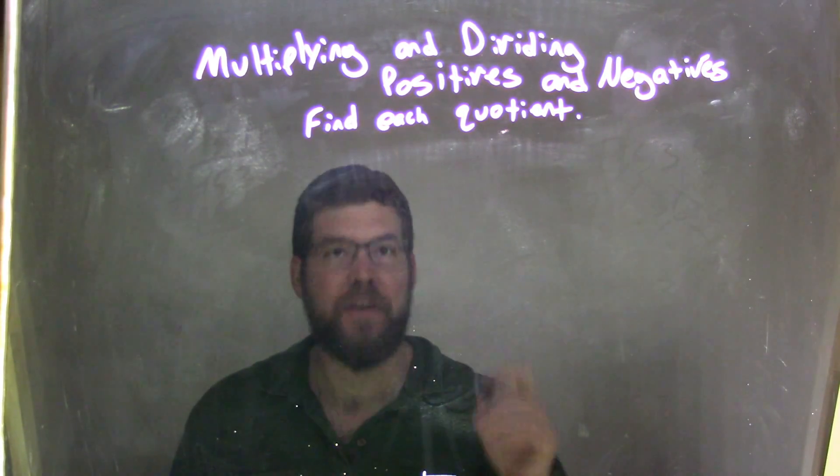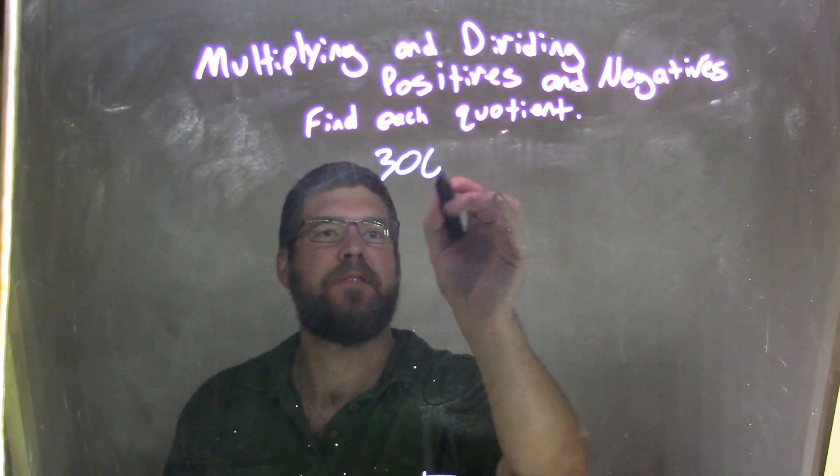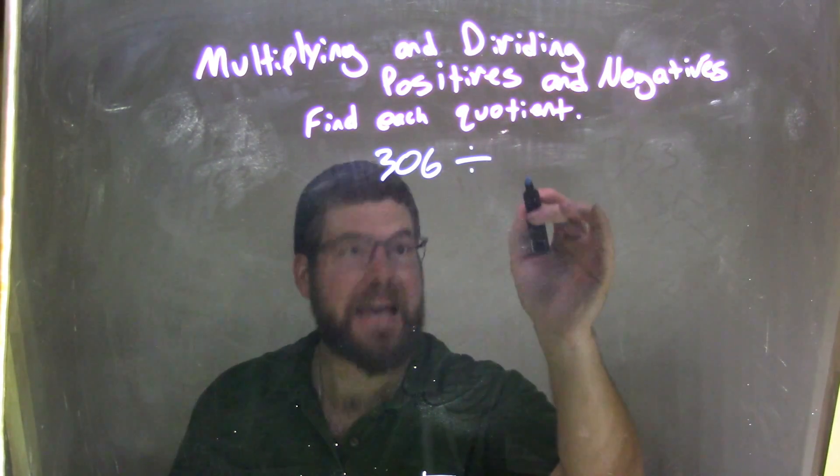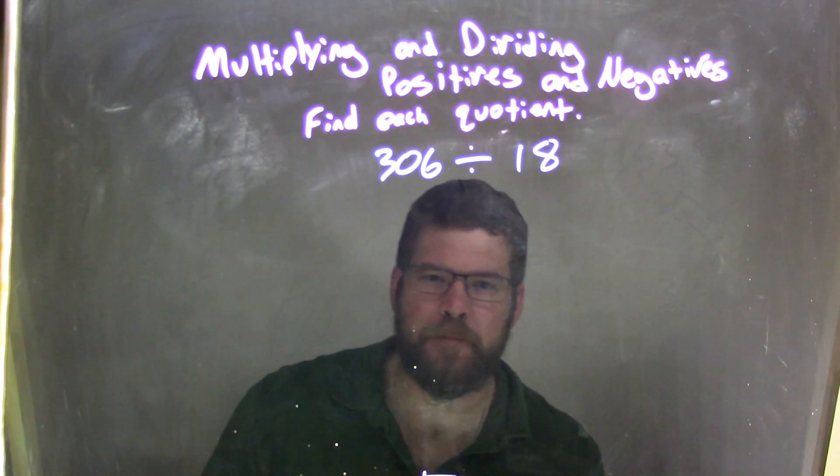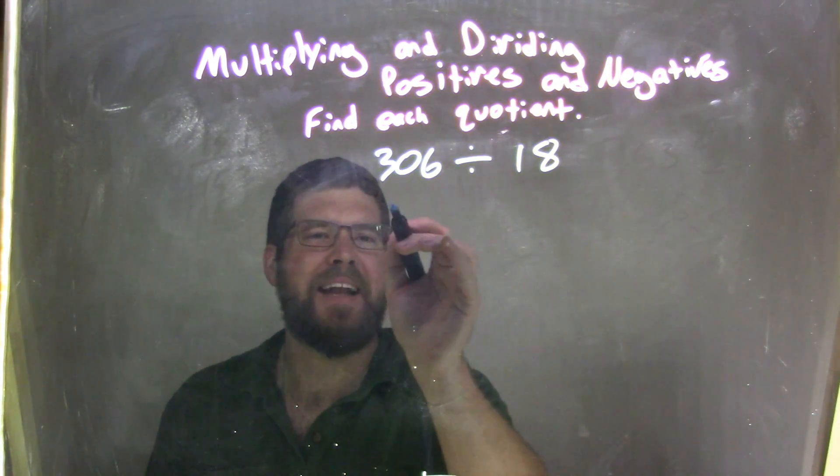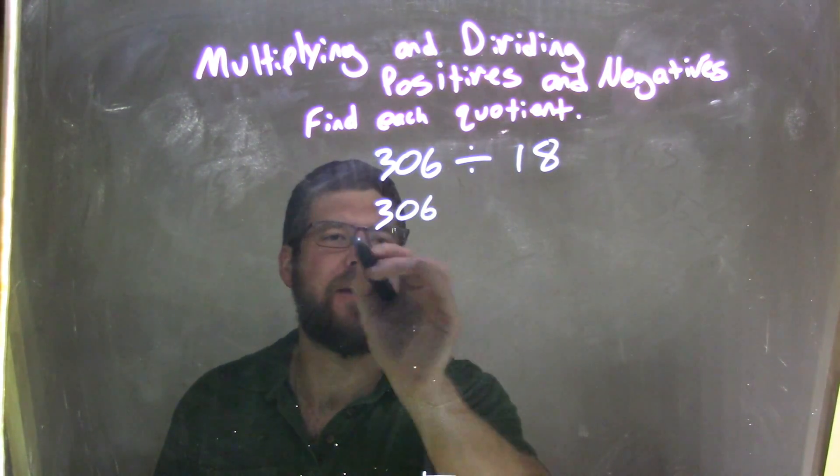If I was given this quotient, 306 divided by 18, this one's going to be tricky. So, first step, I'm going to rewrite it as a fraction because I prefer to see it as fractions. That's my choice.